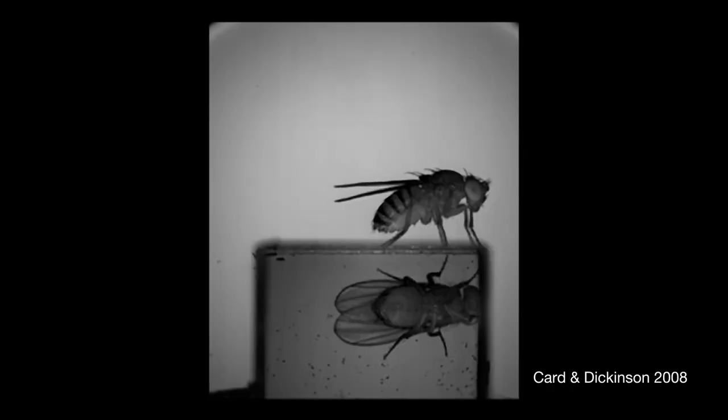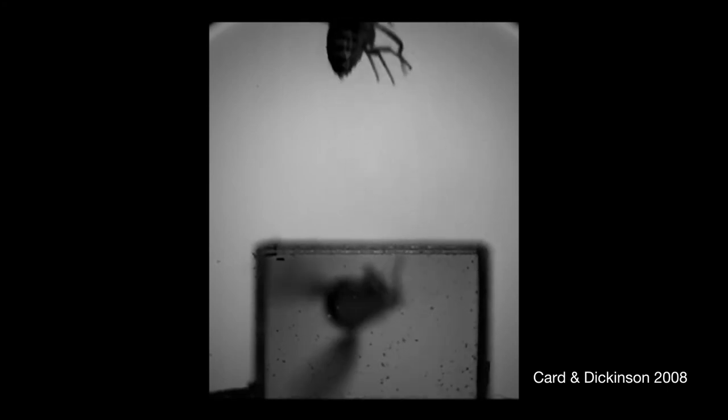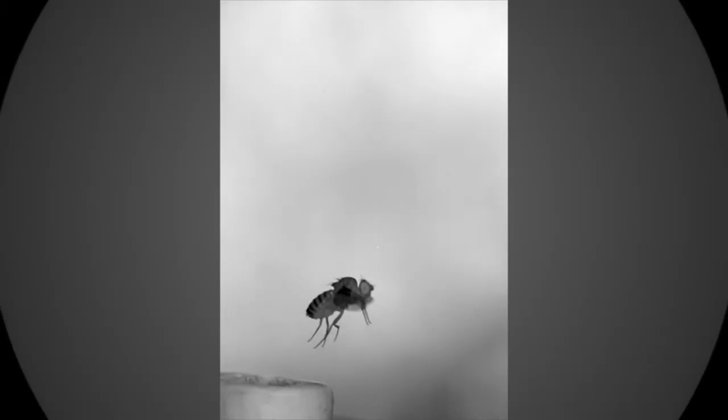This parallel processing lets the fly detect an attack quickly by simultaneously processing distinct features of a looming predator, and then combine multiple streams of information to make the right escape choice. And live to flap another day.